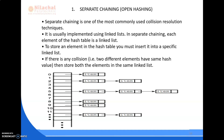Separate chaining is one of the most commonly used collision resolution techniques, and is usually implemented using linked lists. In separate chaining, each element of the hash table is a linked list. To store elements in the hash table, you must insert them into a specific linked list. If there is a collision — that is, two different elements have the same hash value — then both elements are stored in the same linked list.